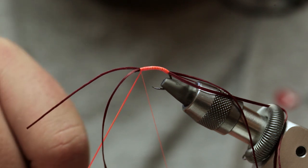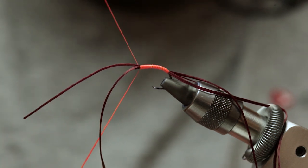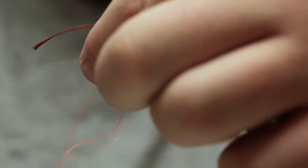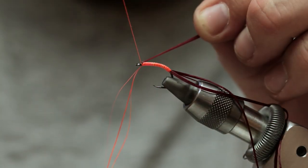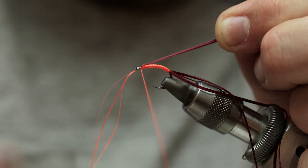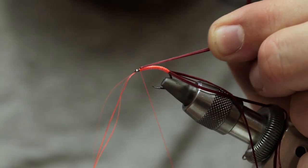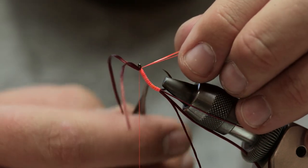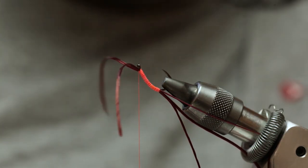And then with the thread come underneath the thread. Hold the thread up, leave go of the neon flash. Grab your legs, and then catch in the neon flash. And then you can trim, come off your neon flash.